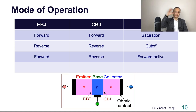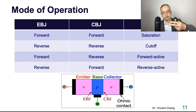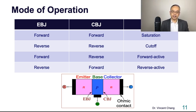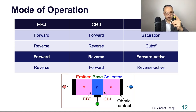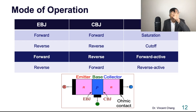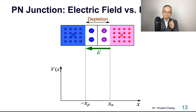The opposite of the forward active mode is called reverse active mode: emitter base junction reverse biased and collector base junction forward biased. The most important one to remember is the forward active mode definition. Just remember one thing at a time: forward active mode means the emitter base junction is forward biased and the collector base junction is reverse biased.